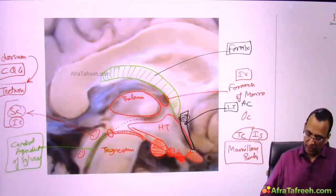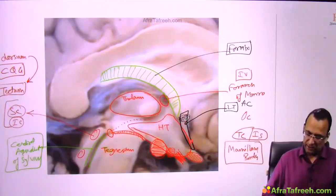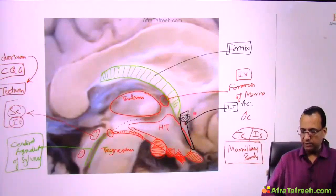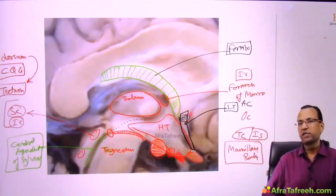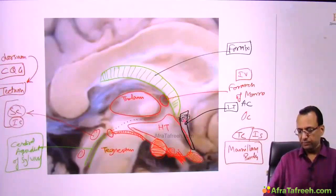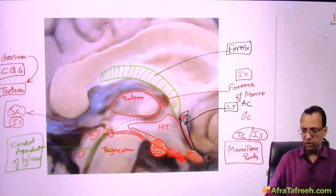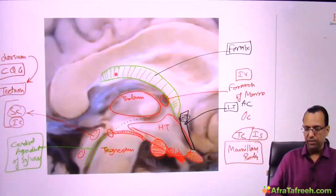The anterior wall of the third ventricle is the lamina terminalis along with the anterior commissure. The anterior commissure is the first commissure to develop, connecting the right brain with the left brain. Some part of the fornix also comes anteriorly, but the fornix is primarily the roof of the third ventricle.